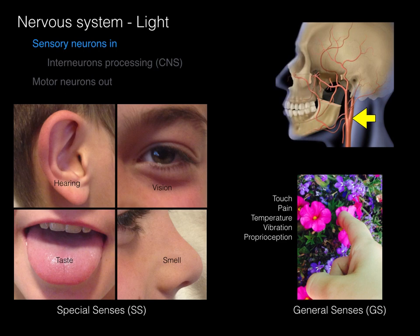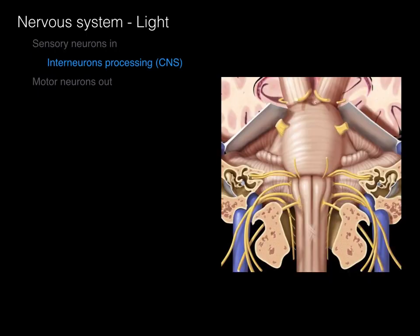The third type of sensory neurons for cranial nerves are called visceral senses, or visceral sensory, VS. This is sensation that you're not conscious of, like baroreceptors detecting changes in vessel pressure, chemoreceptors detecting changes in oxygen or CO2 in the blood, or stretch receptors in the gut tube.